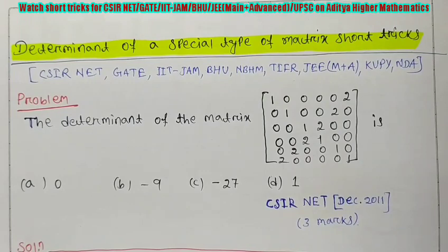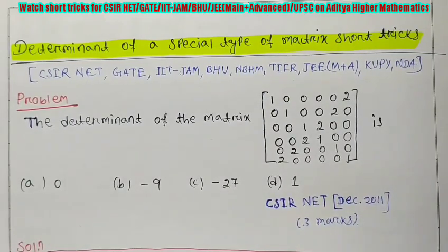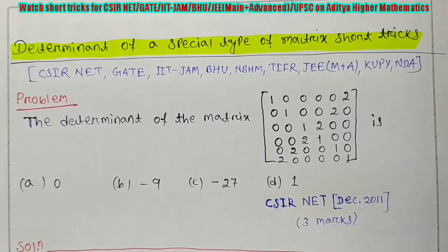So first I will explain what is that shortcut method. And using this trick, you can find out the determinant in 10 or 15 seconds.